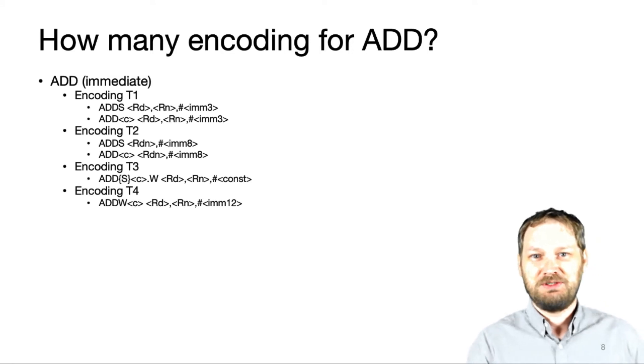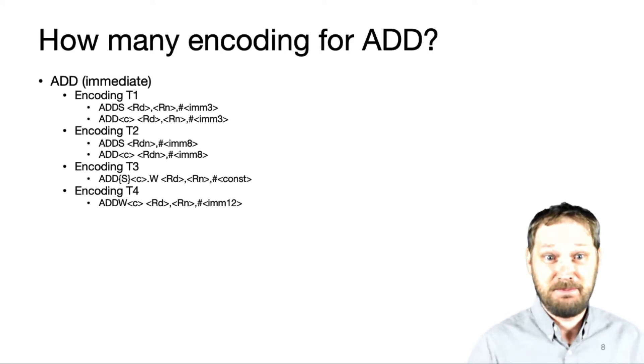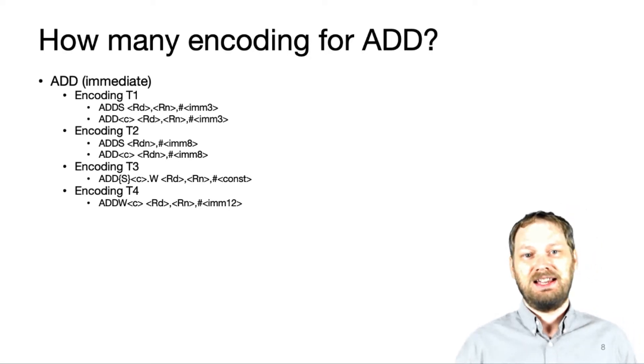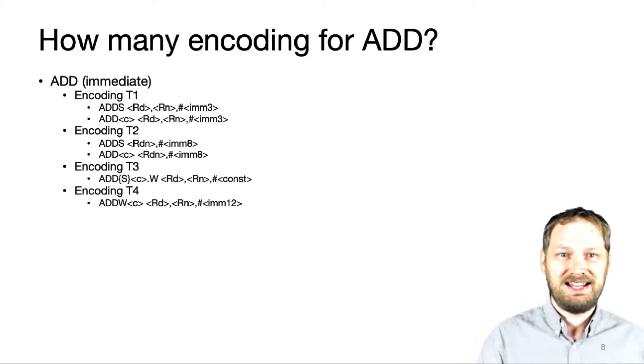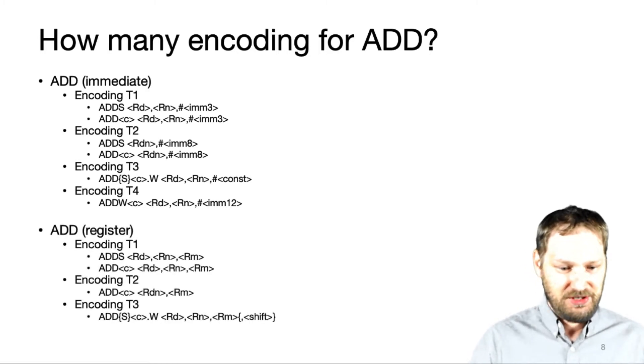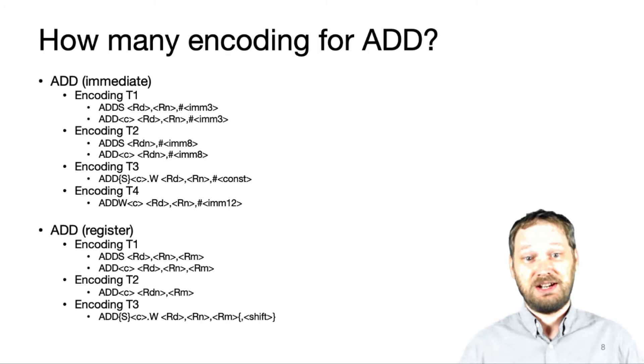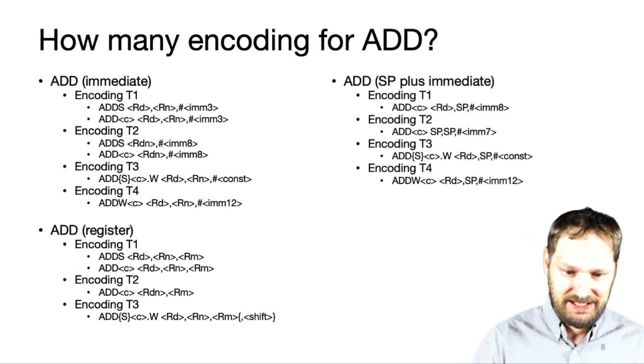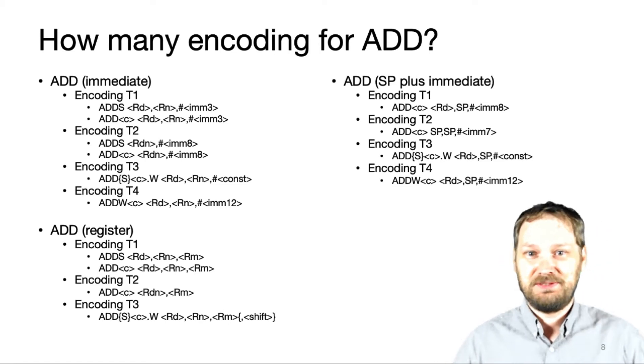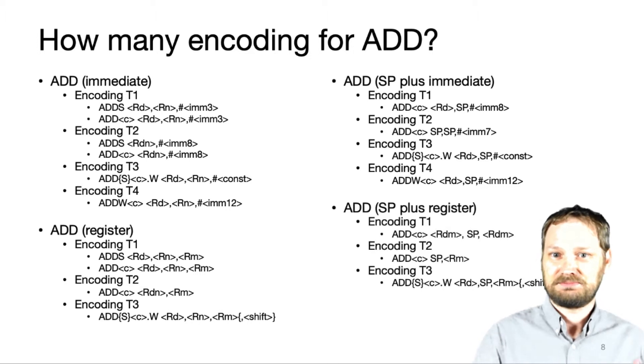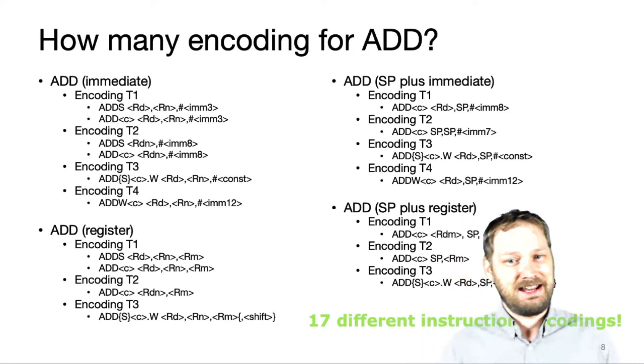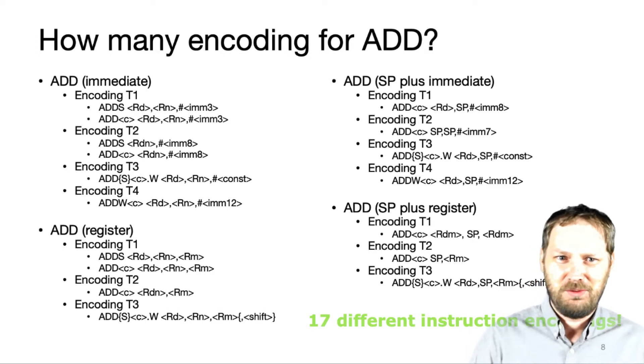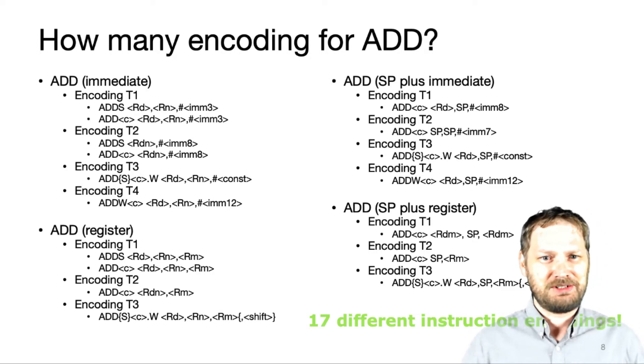So how many encodings do you think there are for add? There's an add immediate which means you can add a constant value that's immediately available to a register value, and there's four different encodings of that. There is add register which is focused on taking different registers and adding them together, multiple encodings in that. There's also a whole subset of adds that are specifically for the stack pointer. So in total, there's 17 different instruction codings just for add. And that kind of is a little puzzling, right? This is a pretty fundamental thing. Why are there so many different versions of the same instruction?